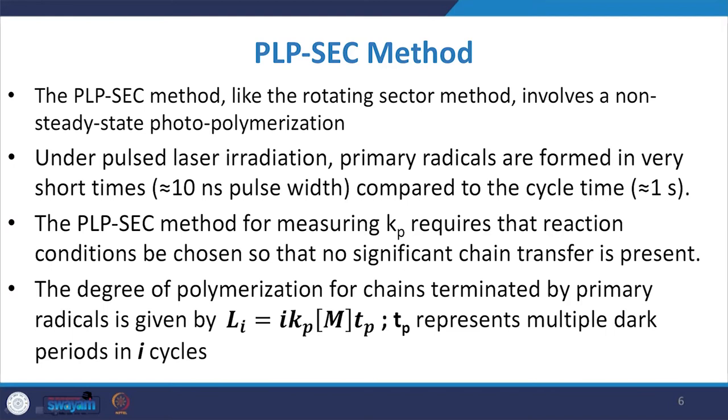The PLPSEC method, like the rotating sector method, involves non-steady-state photopolymerization. Under pulsed laser irradiation, primary radicals are formed in a very short time, typically a pulse width of around 10 nanoseconds compared to a cycle time of approximately 1 second. This method requires that reaction conditions be chosen so that no significant chain transfer is present.